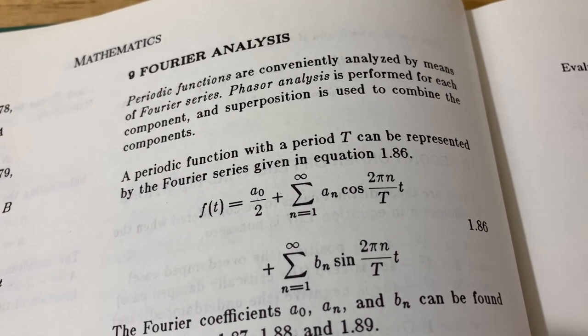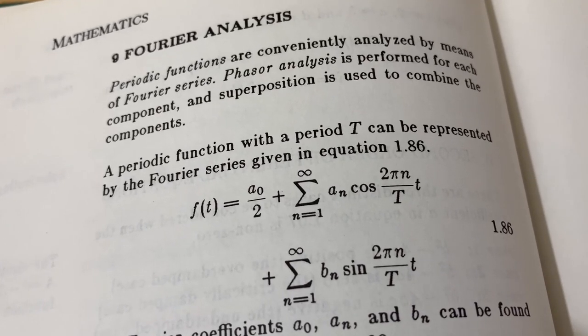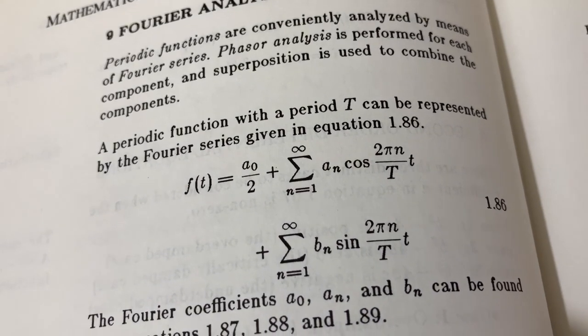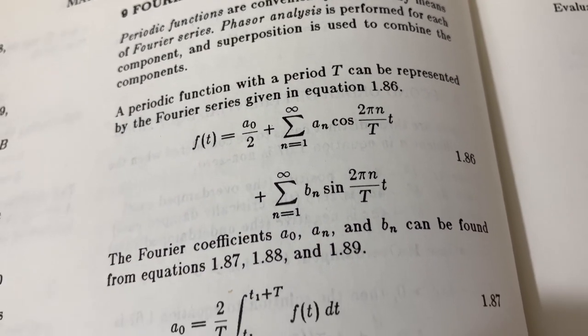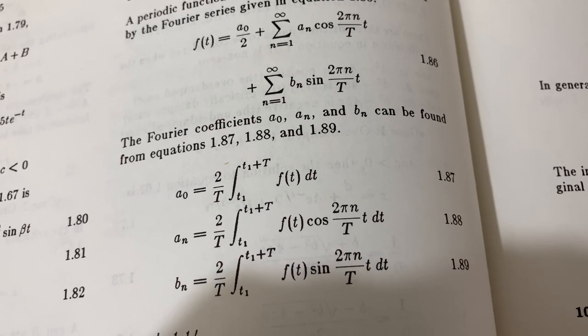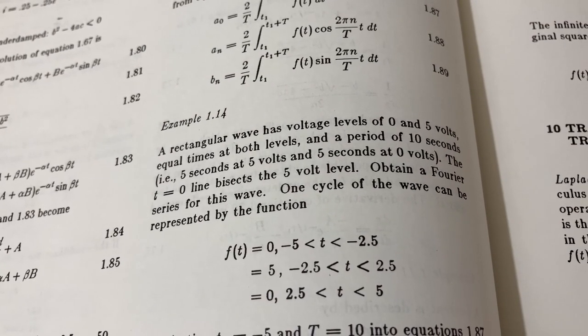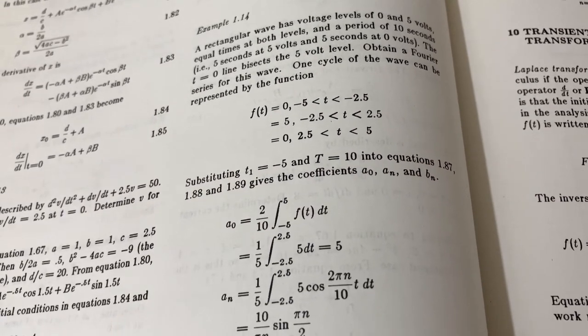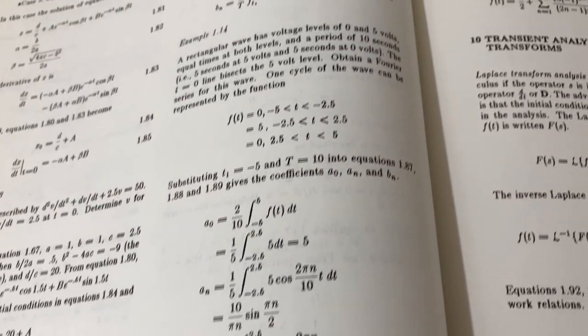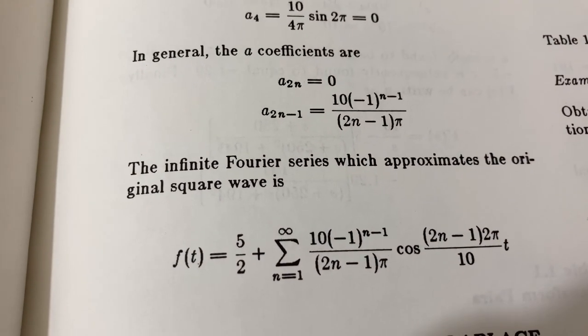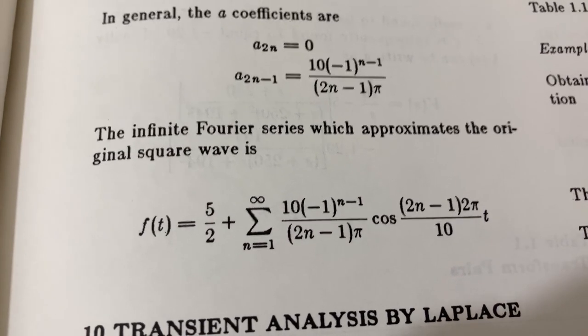Here they talk about Fourier analysis. It says a periodic function with a period T can be represented by the Fourier series given in equation 1.86. And then it gives you the formulas for the Fourier coefficients. Then they actually do an example where they find a Fourier series for a wave and the authors go through and show quite a bit of work. And then here is the infinite Fourier series which approximates the original square wave.